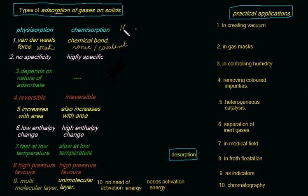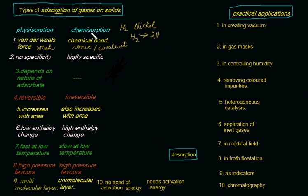Adsorption of hydrogen on the surface of nickel: initially it is physisorption, later on it becomes chemisorption. Initially, the dihydrogen sticks to the surface of nickel and gets converted into atomic hydrogen. The molecular hydrogen becomes converted to atomic hydrogen. Later on, the process proceeds by chemisorption. So it is possible that physisorption and chemisorption may take place simultaneously.